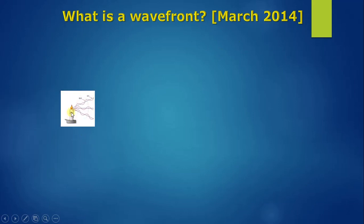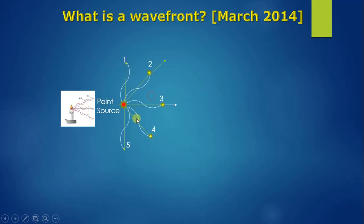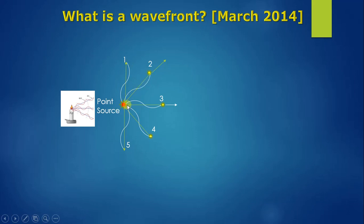Let me start with a light source — you can take any light source, a bulb or candle. I treat this light source as a point source. Assume that this point source is emitting light waves in all directions. These are the light waves traveling and spreading from this point source in all directions. I have taken only the forward directions.